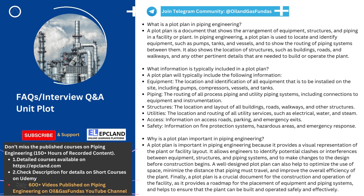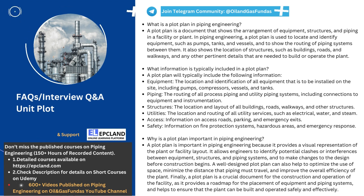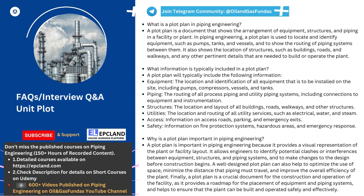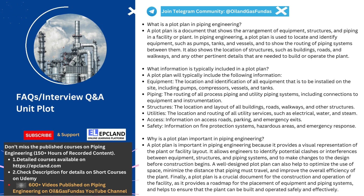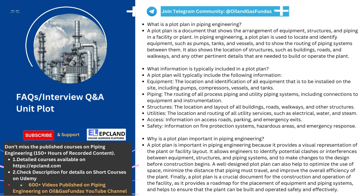Moving on to the second question: What information is typically included in a plot plan? A plot plan is a comprehensive document that provides a wealth of information about the layout and arrangement of a facility or plant. Firstly, the location and identification of all equipment to be installed on the site, including pumps, compressors, vessels, and tanks. The routing of all process piping and utility piping systems, including connections to equipment and instrumentation, is also shown.